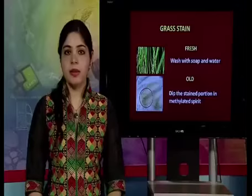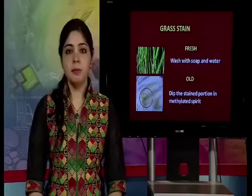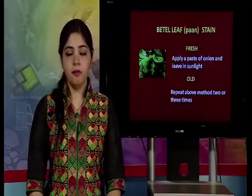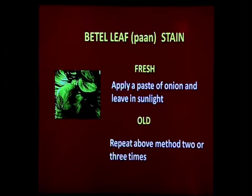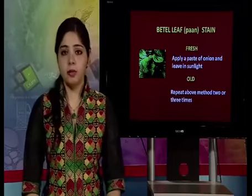The next stain in the miscellaneous category is a grass stain. For fresh grass stains, wash with soap and water. If the stain is old, dip the stained portion in methylated spirit. The next stain is betel leaf or paan stain — for all fabrics, both natural and synthetic, apply a paste of onion and leave in sunlight. If the stain is old, repeat the method two or three times, as sunlight acts as a natural bleach.